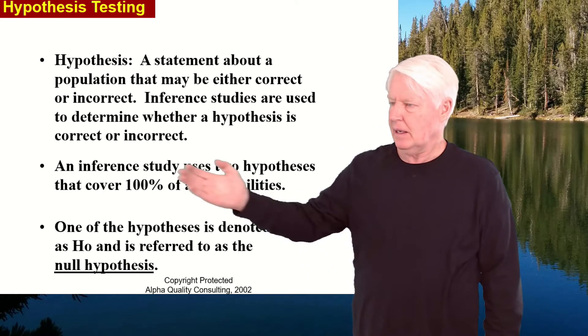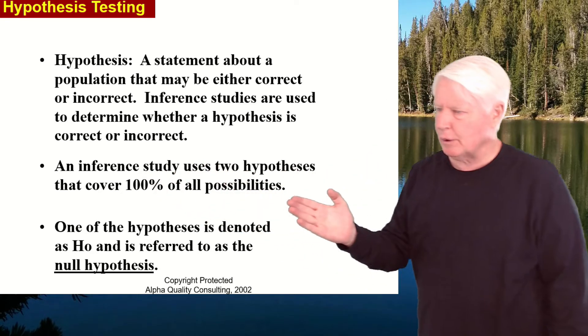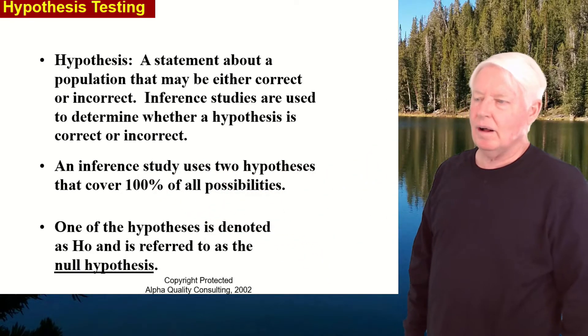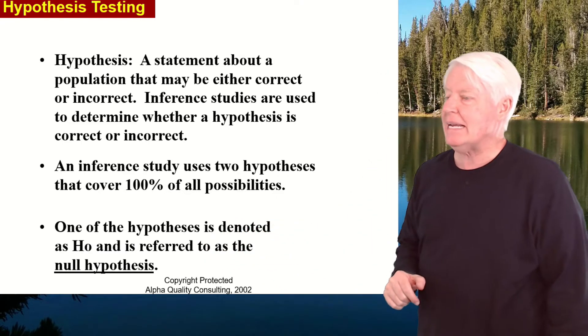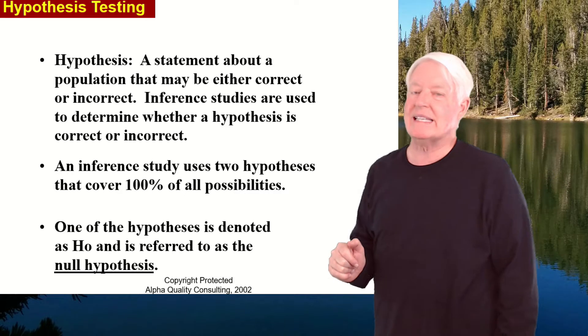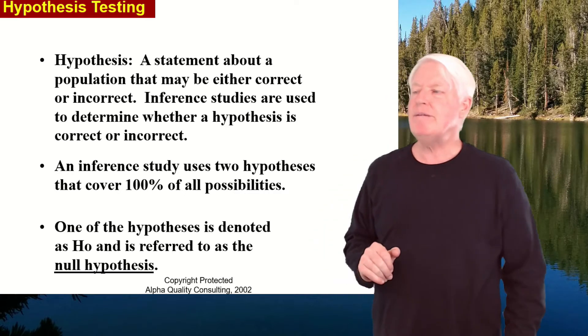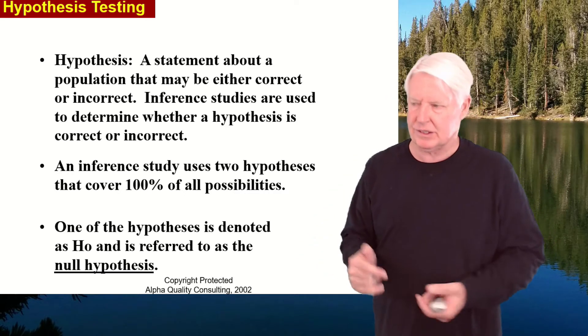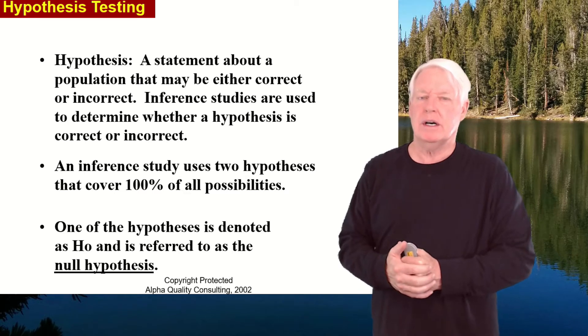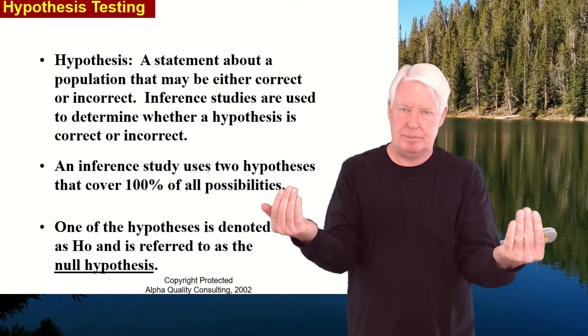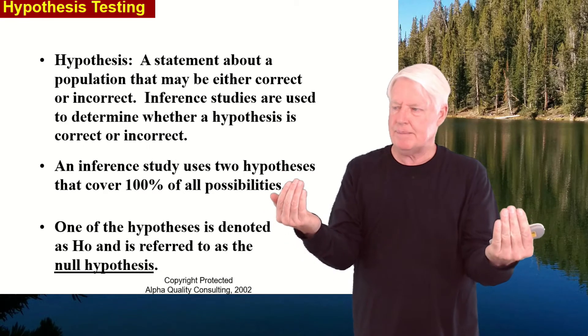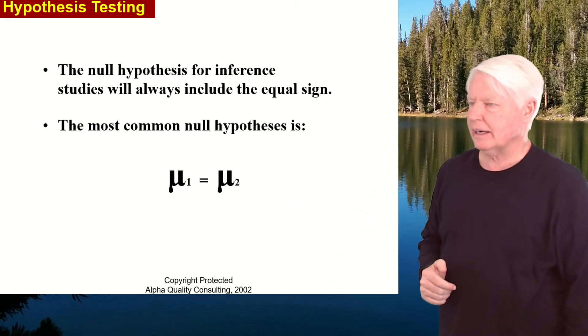An inference study uses two hypotheses that cover 100% of all possibilities. One of the hypotheses is denoted as H naught and is referred to as the null hypothesis. So every inference or hypothesis test will have two hypotheses: the null hypothesis and the alternative hypothesis.